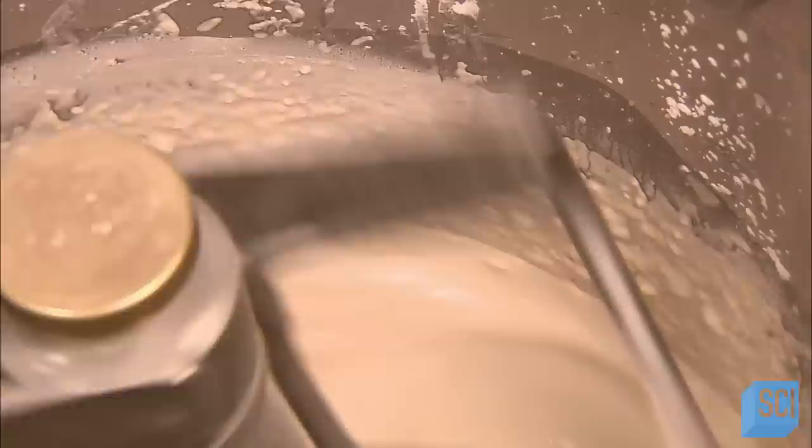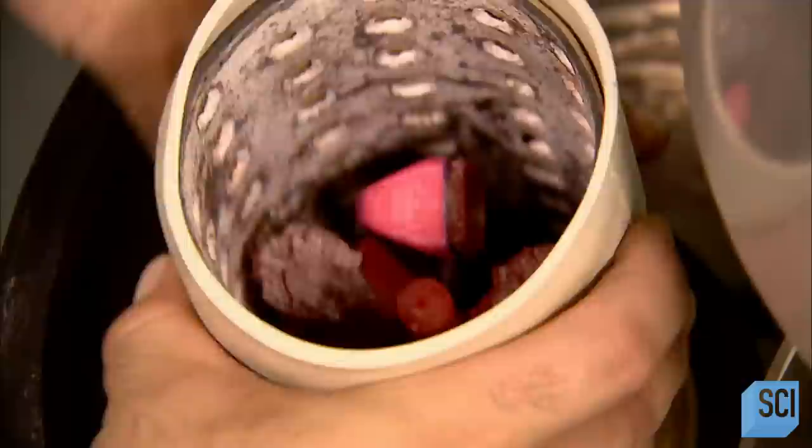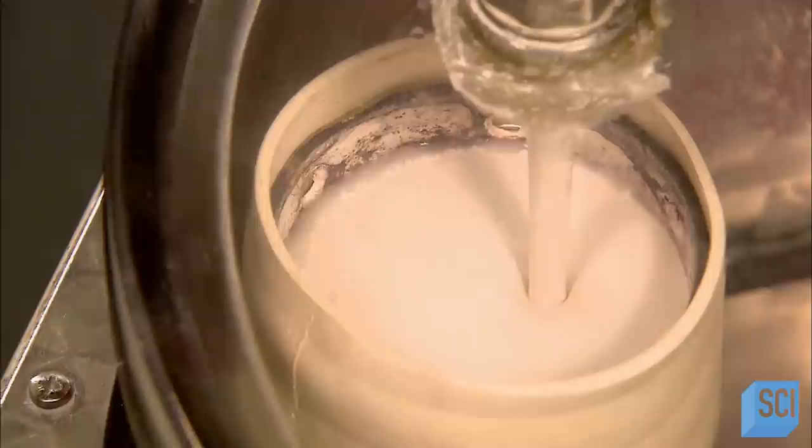Next, they mix up some plaster, blending it for a good half hour under a vacuum to remove all the air bubbles. Then they inject the plaster into the flask, engulfing the wax models and supporting structure inside. Over the next 12 hours, the plaster hardens into a shell around the wax.